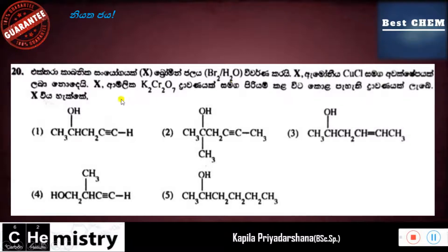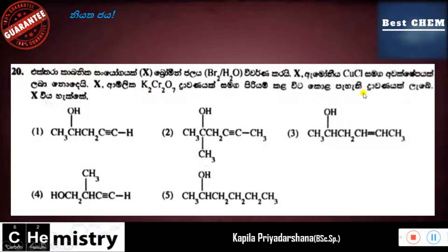If the potassium dichromate is sent to the potassium dichromate, there is a form of potassium dichromate. We have to look at the chromium as well. If you see the chromium, you can get the chromium as well.